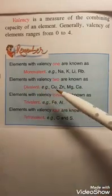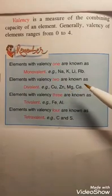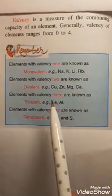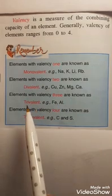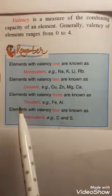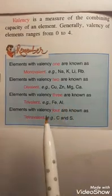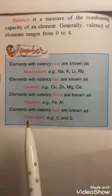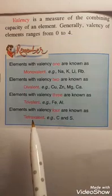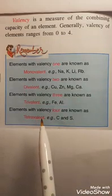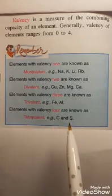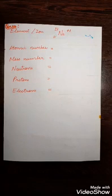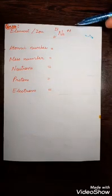Elements with valency two are known as divalent — examples include copper, zinc, magnesium, and calcium. Elements with valency three are known as trivalent — examples are iron and aluminum. Elements with valency four are known as tetravalent — examples include carbon and sulfur. Please remember these.